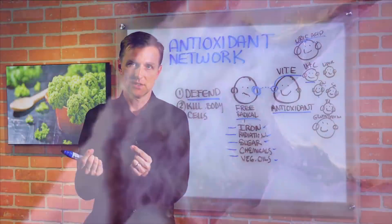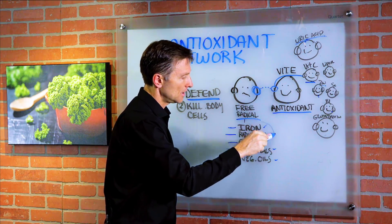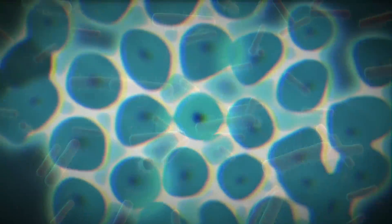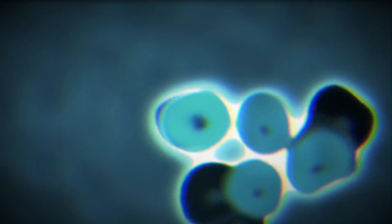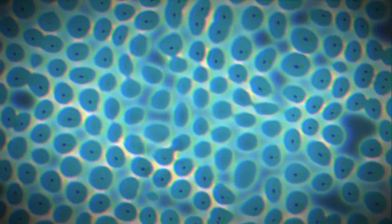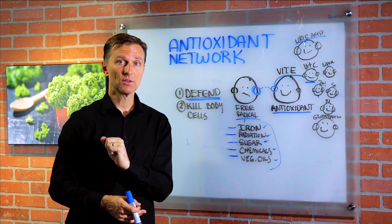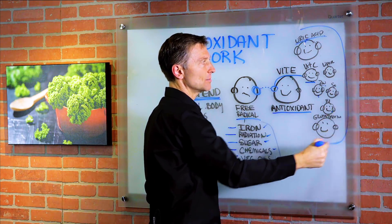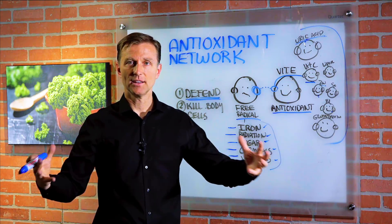Your body actually makes oxidants, and they also come from the environment. Your body makes hydrogen peroxide, for example, to defend itself — kills off microbes, and also kills its own cells because there's constant repair action. The body kills off old dead cells and replaces them. Every second you replace 5 million cells, and oxidants are how the body does that. You still need antioxidants to repair the damage from this massive killing action.